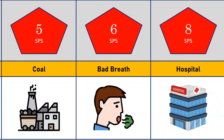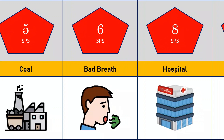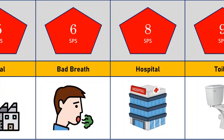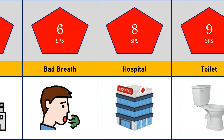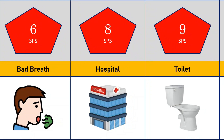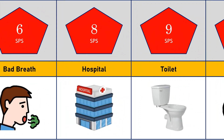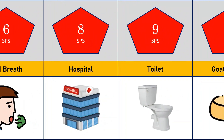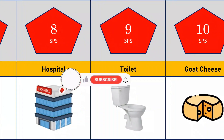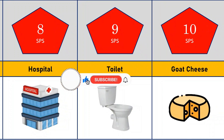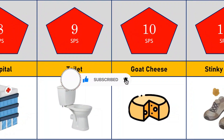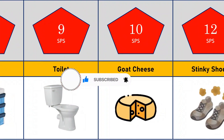Smell of bad breath: 6 SPS. Smell of hospital: 8 SPS. Smell of toilet: 9 SPS. Smell of goat cheese: 10 SPS.